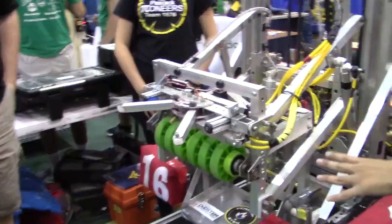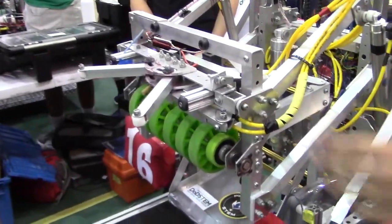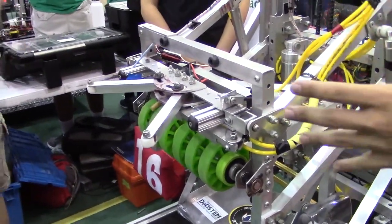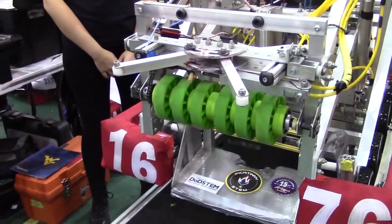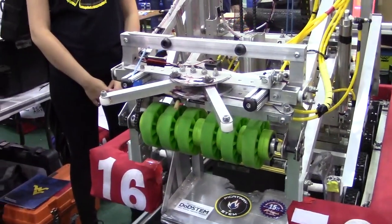So for our intake, we really wanted to make sure that we were combining both game pieces. That was very important to us to make sure that we could do the rocket fully. So we have the intake here for the hatches. It's just a passive system. Go in, grab, pull out.